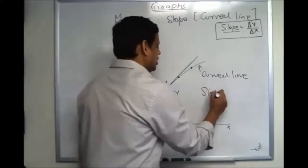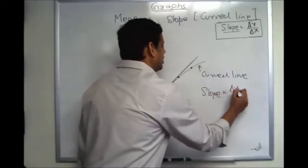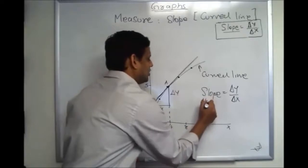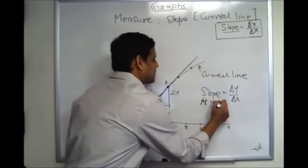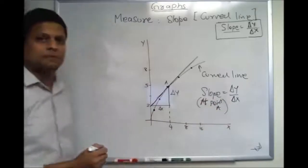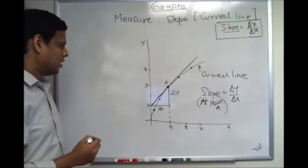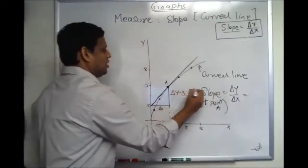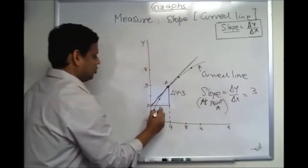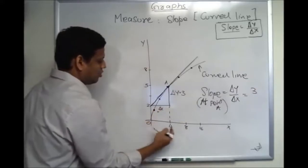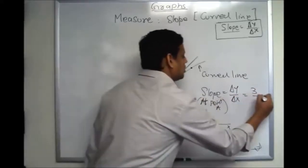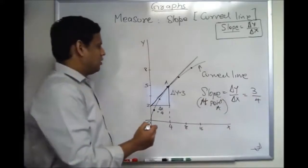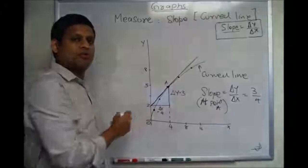The slope is change in y over change in x, as usual, but at the specific tangent point. In this case, the change in y is equal to 3, and the change in x is equal to 4. So the slope of this curve at this point is 3/4.